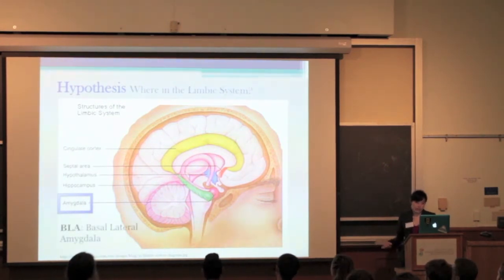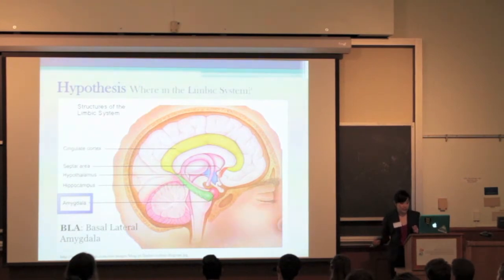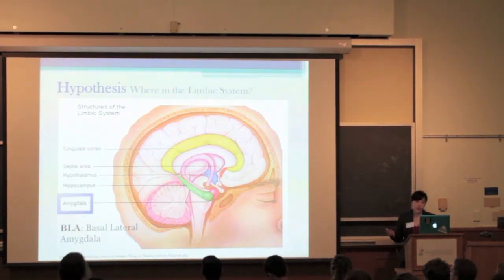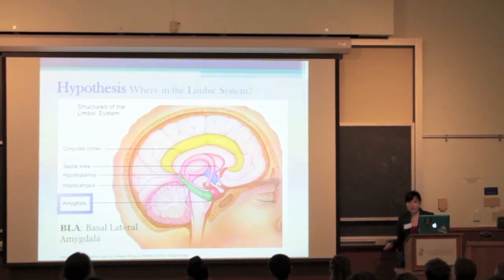More specifically, we believe that the amygdala is involved in prosociality. The basal lateral amygdala, in particular, because it contains neurons that respond to faces, and it is where sensory and social information become integrated, which can in turn facilitate learning. What that means is that the BLA is most likely the place in which the rat, after seeing and hearing the trapped rat's distress, understands that it needs to help and tries to figure out the task. So, it's a good place to start looking.